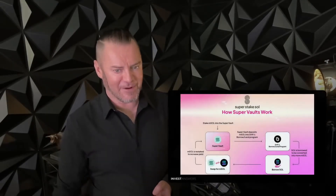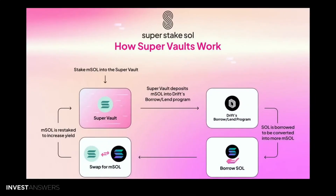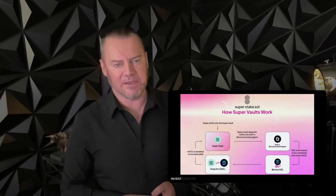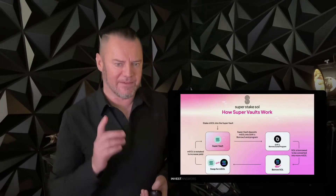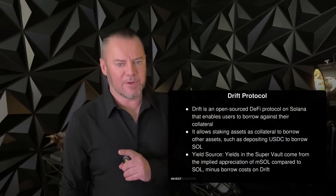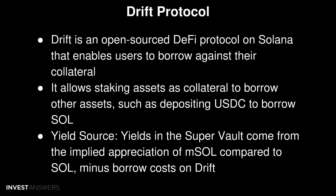A visual of this looks something like: swap your SOL for mSOL, others borrow SOL, and Drift has that lending program. It's not unlike what happens in other DeFi protocols, but this is very SOL and mSOL specific. There's also the Drift Protocol — an open-sourced DeFi protocol on Solana that allows staking assets as collateral to borrow other assets, such as depositing USDC to borrow SOL.